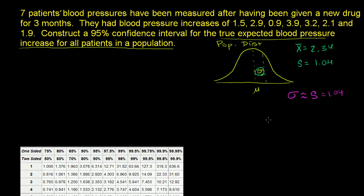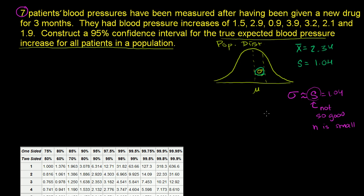We're estimating our standard deviation with an n of only seven, so this is probably going to be a not-so-good estimate because n is small. In general, this is considered a bad estimate if n is less than 30; above 30 you're in the realm of pretty good estimates. The focus of this video is that when we think about the sampling distribution — which is what we'll use to generate our interval — instead of assuming the sampling distribution is normal like we did in other videos using the central limit theorem, we're going to tweak it. We're not going to assume it's a normal distribution; we're going to assume it's something called a t-distribution.